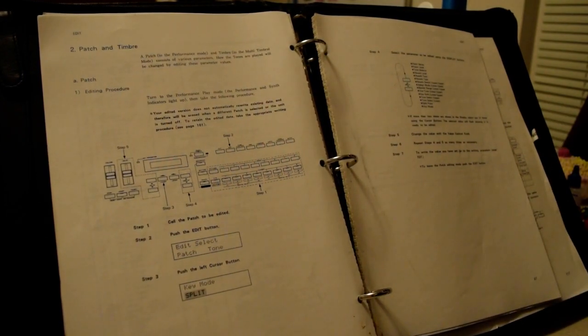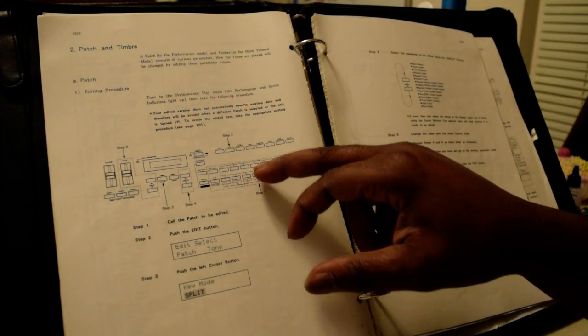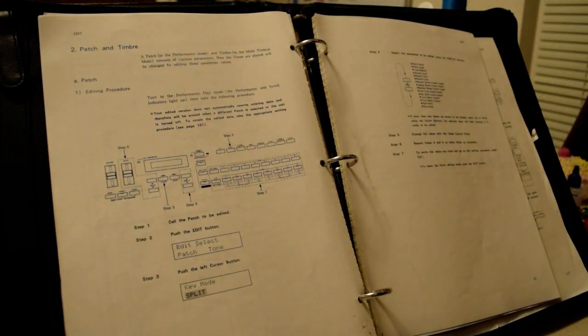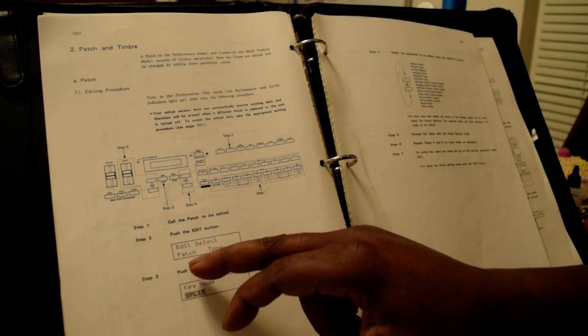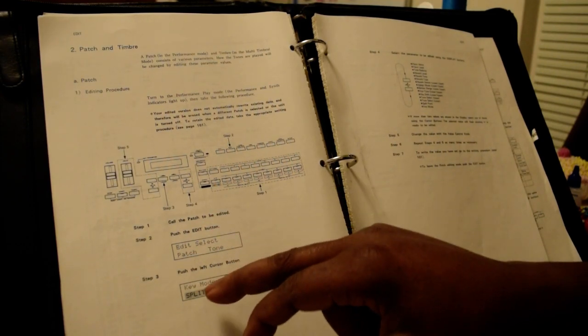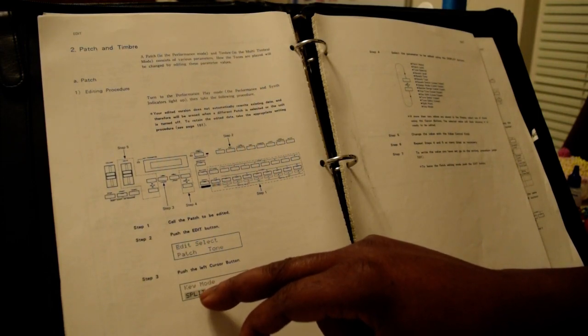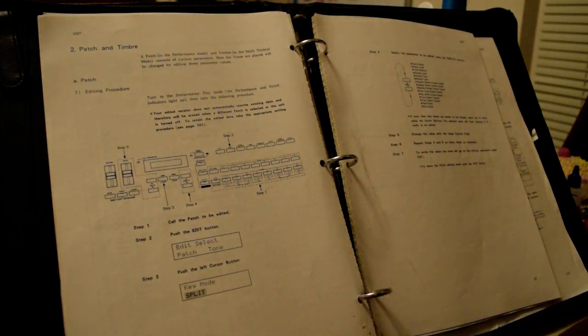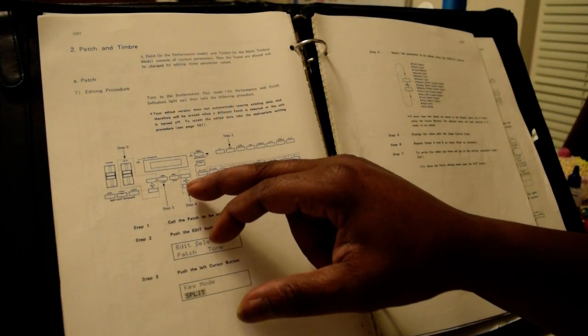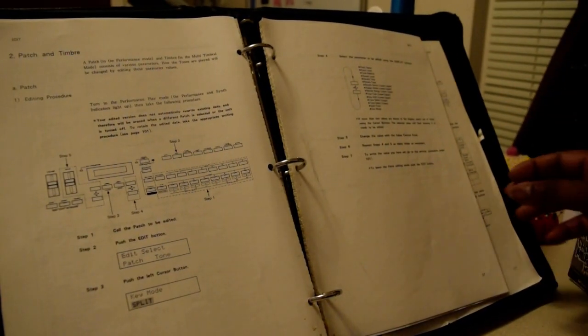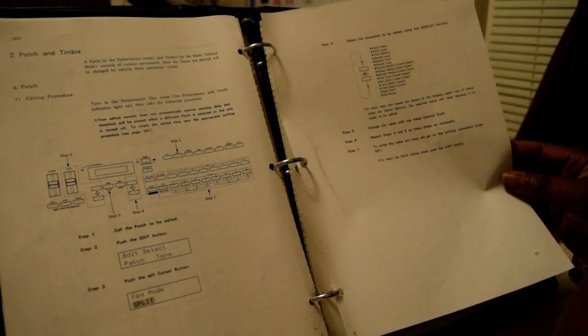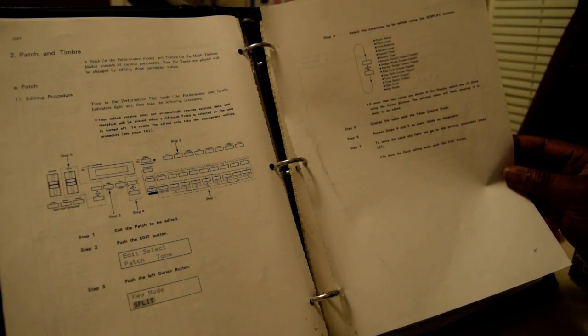You have to hit edit, go to part four right here, and then go to step edit. Once you go there, you can change it. You hit edit, you can go to patch, or you can go to tone. In the key mode, it looks like this is in split. A lot of times you have to go back and forth with this display button here. I'm going to show you something over here on this page. It says select a parameter to be edited using the display buttons.